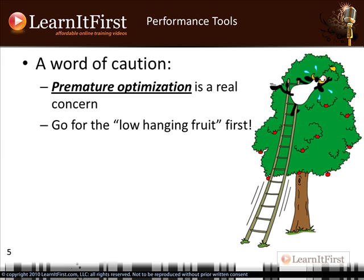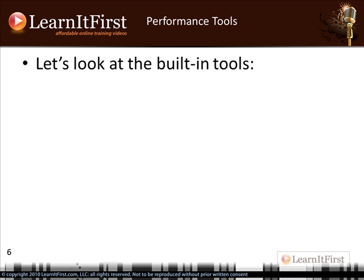Premature optimization is a real time-stealer and will sink a project. With performance tuning, think about the Pareto 80/20 rule: 80% of the optimizations are achieved by doing 20% of the things. The other 80% of optimization effort only gets you that final 20% improvement. Grab the low-hanging fruit first, and don't spend too much time prematurely implementing things you think you'll need down the road.